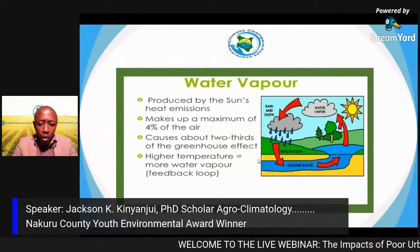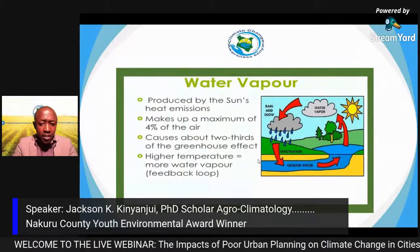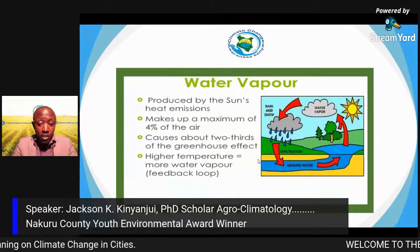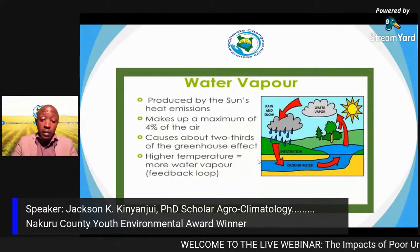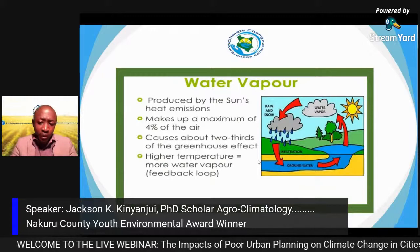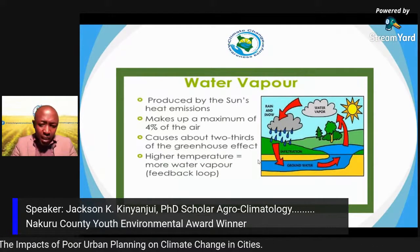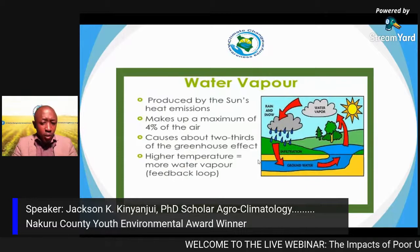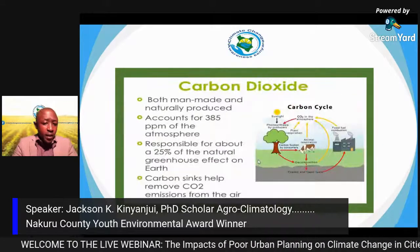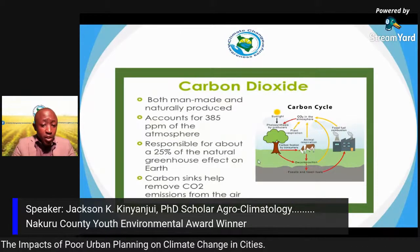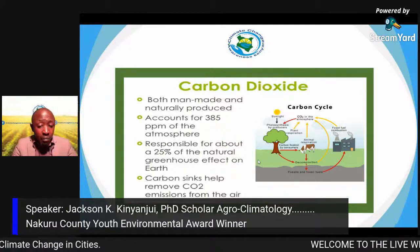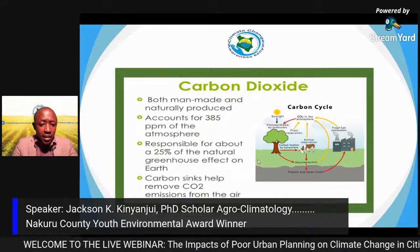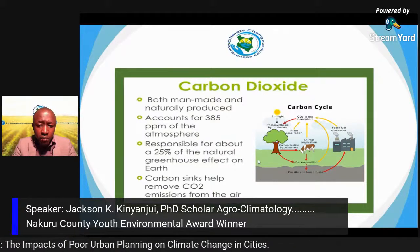Higher temperatures lead to more water vapor — a feedback loop. The hydrological cycle would not be possible without solar heating: water evaporates, forms vapor, condenses, and falls back. These clouds help reduce solar radiation entering Earth. Carbon dioxide is produced both naturally and by human activity — by plants and animals when exhaling, from industry, combustion, and burning of wood and charcoal.